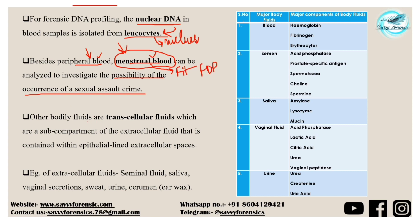The other bodily fluids are called transcellular fluids, which are a sub-compartment of the extracellular fluid contained within the epithelial-lined extracellular spaces. We can also extract nucleic acids from extracellular fluids such as seminal fluid, saliva, vaginal secretions, sweat, urine, and cerumen — which is earwax. These are the extracellular fluids from which nucleic acids can be obtained.